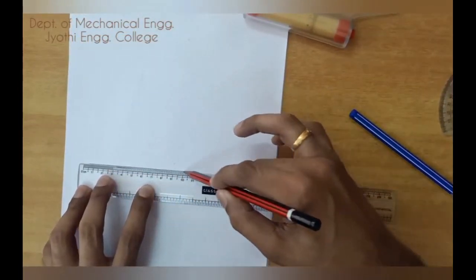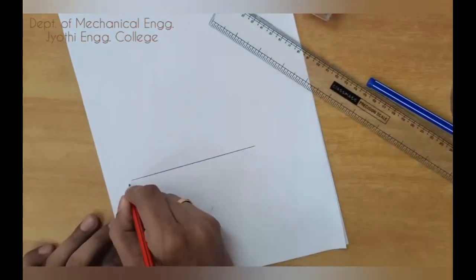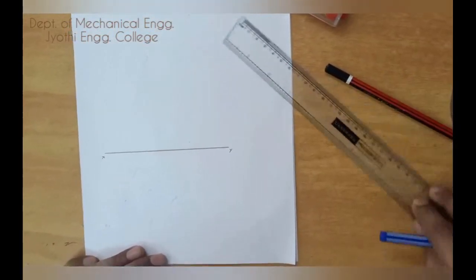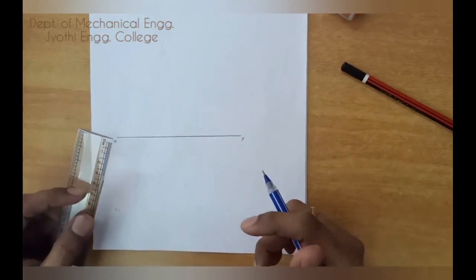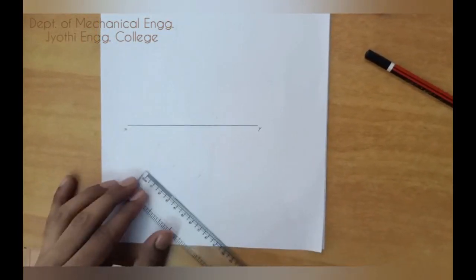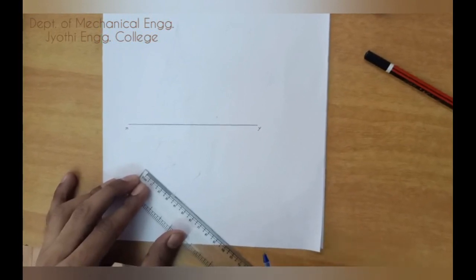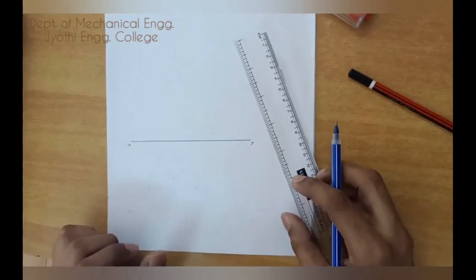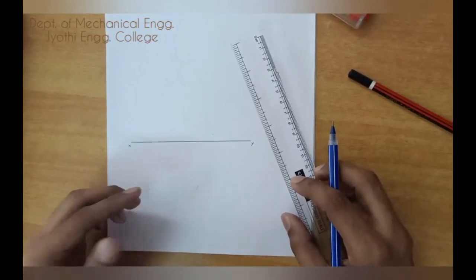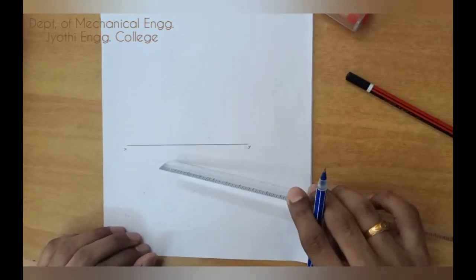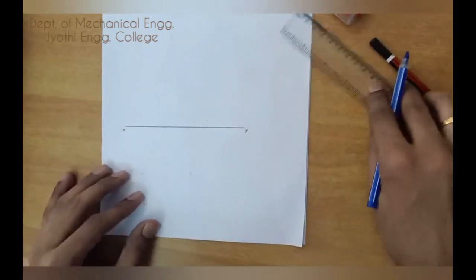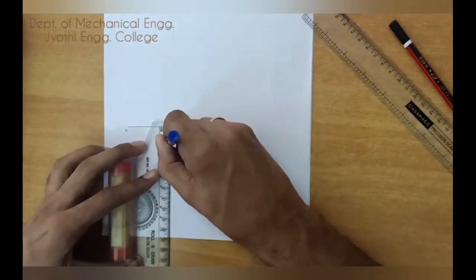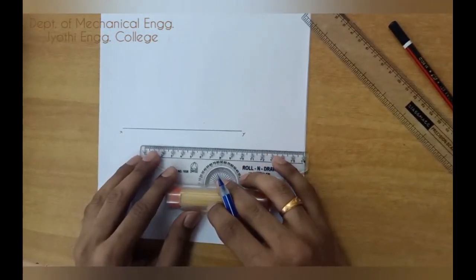First draw the XY line, mark X and Y. The question is given that pentagonal pyramid resting on HP. In the top view you will have a pentagon and in the front view you have a triangle. One more condition is there, the side of the pentagon, base side should be parallel to the XY line and 15mm in front of VP, that is 15mm in front of XY line. Take 15mm in front of XY line and draw the pentagon such a way that one of the base side is parallel to the XY line.